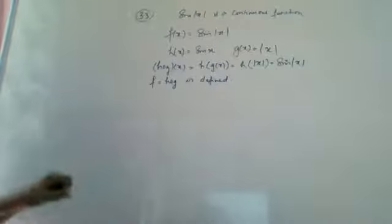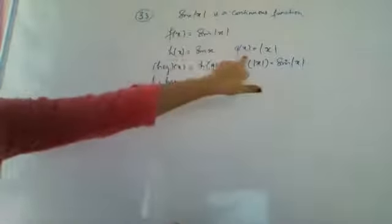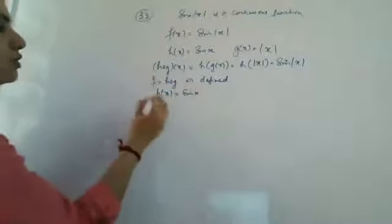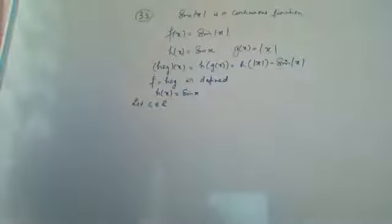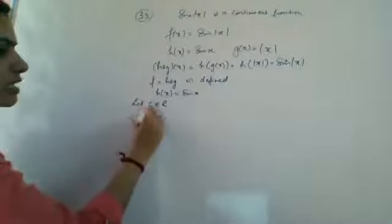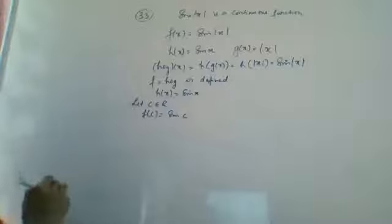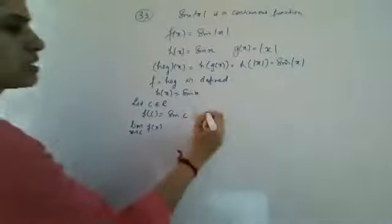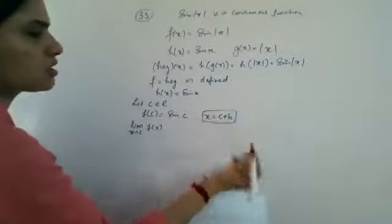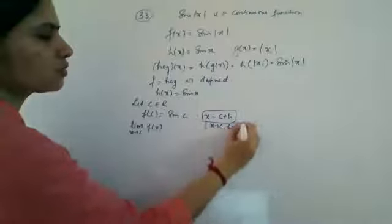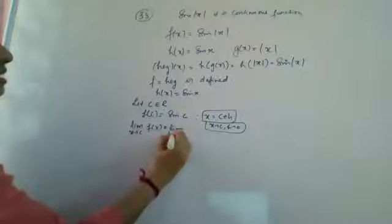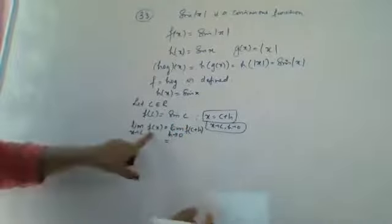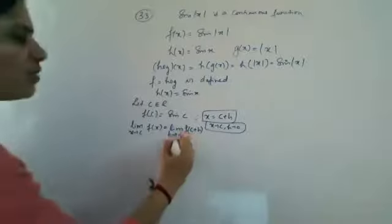Now we have to show that f is continuous. For that, we will show that h of x and g of x are both continuous, so that their composition is also continuous. We start with h of x equal to sine x. Let c belong to R. Then f of c equals sine c. For the limit as x tends to c of f of x, replace x with c plus h, so that as x tends to c, h tends to 0.